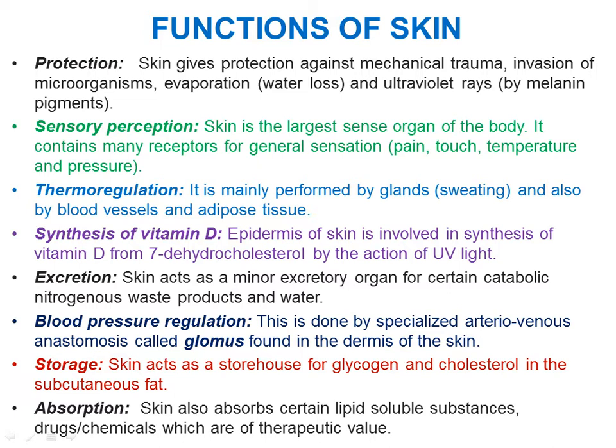Third is thermoregulation — body temperature is maintained with the help of skin. Skin also synthesizes vitamin D by the action of ultraviolet light and performs excretory function. Fourth is blood pressure regulation, done by specialized arteriovenous anastomosis present in the dermis of the skin, called the glomus.